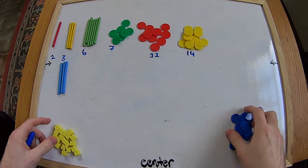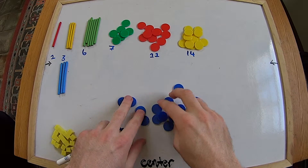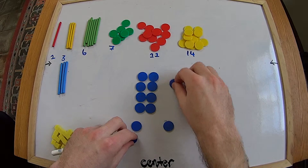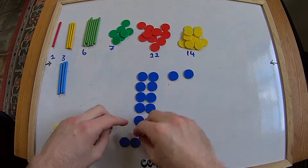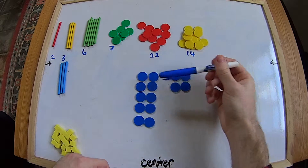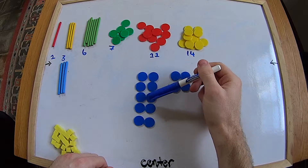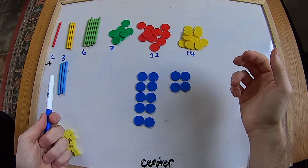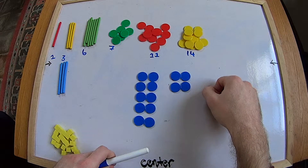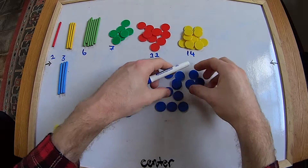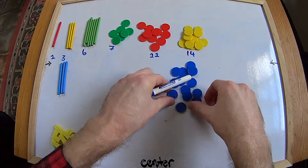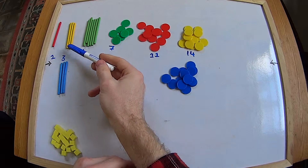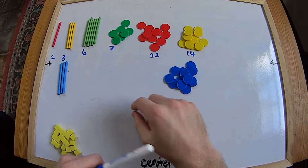We've got some blue counters left. There's a lot of them so we'll space them out in groups of two so we don't count them twice. Let's count: one, two, three, four, five, six, seven, eight, nine, ten, eleven, twelve, thirteen, fourteen - fourteen blue counters! That's the same number as our yellow counters, so we'll put them in a group under the fourteen. Interestingly, we've got fourteen yellow counters, fourteen blue counters, three yellow sticks, and three blue sticks!